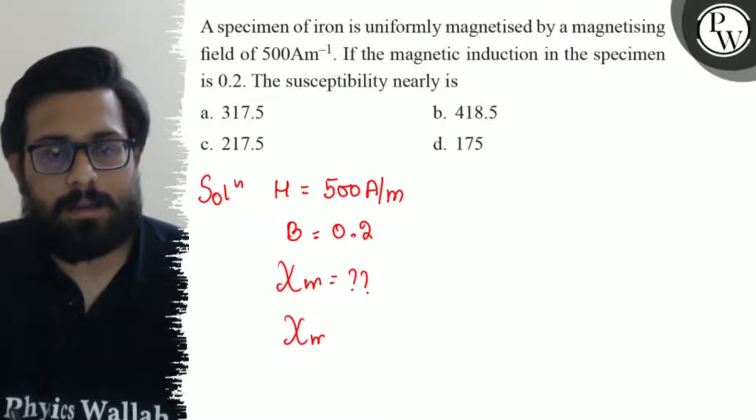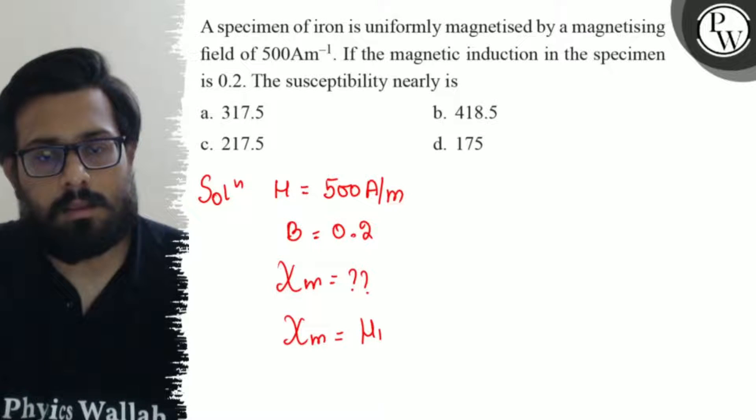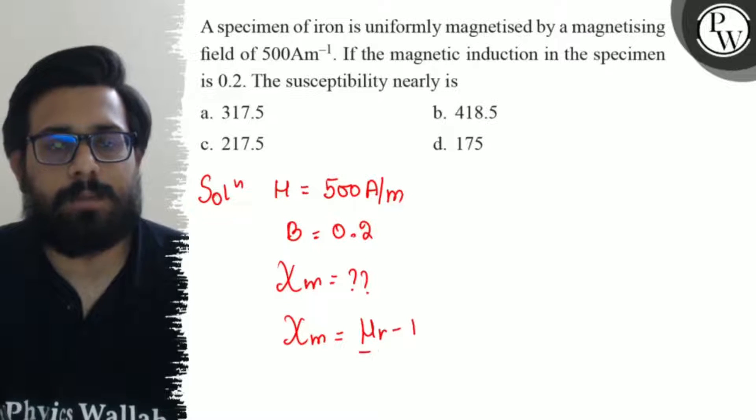Magnetic susceptibility χm can be written as μR minus 1, where μR is the relative permeability.